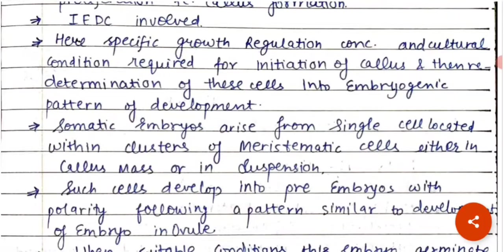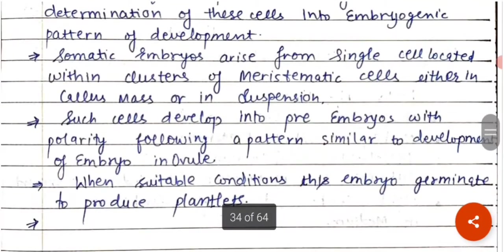For callus initiation, we need to provide proper nutrient medium, proper temperature, pH, and conditions. Then the determination of these cells into the embryogenic pattern of development occurs. Somatic embryos arise from single cells located within clusters of meristematic cells, either in callus mass or in suspension. Such cells develop into pre-embryos with polarity, following a pattern similar to embryo development in the ovule. When suitable conditions are met, these embryos germinate to produce plantlets.